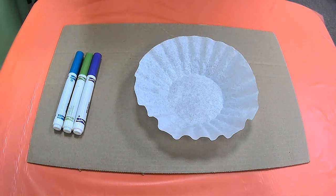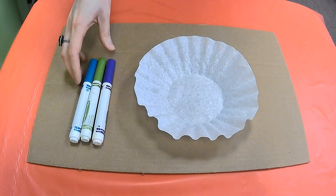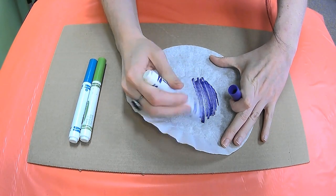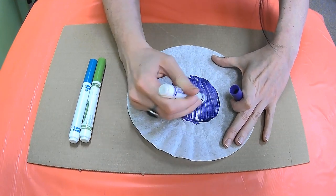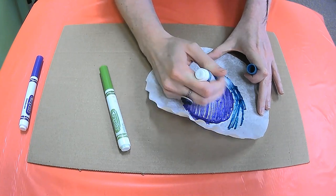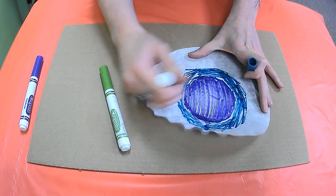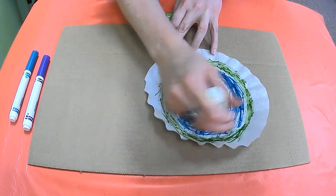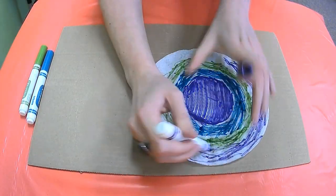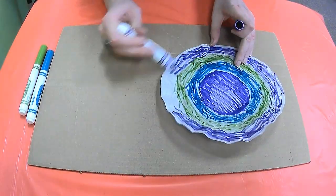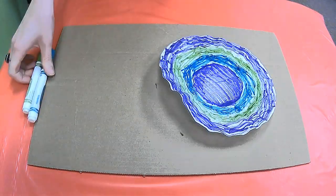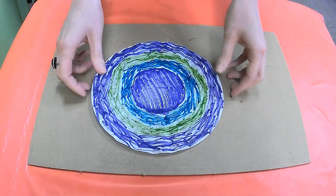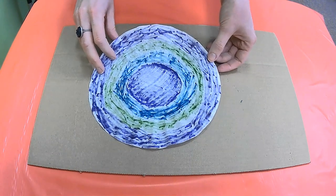All right, I'm going to go ahead and decorate my coffee filter using purple, green, and teal, but you can use whatever colors you would like and decorate it with whatever pattern you want. So you only need to color one side of your coffee filter because as you can see, the color bleeds through to the other side anyway.